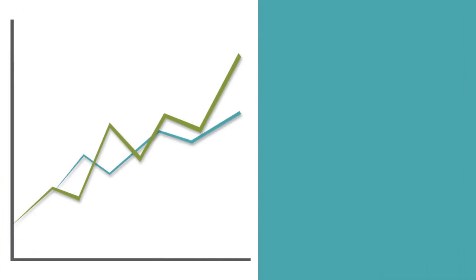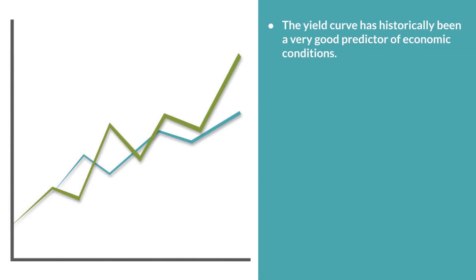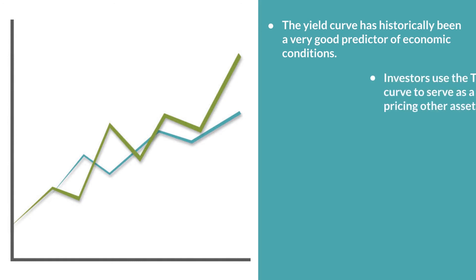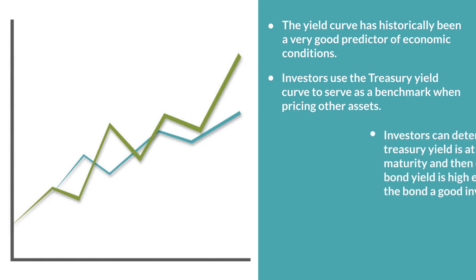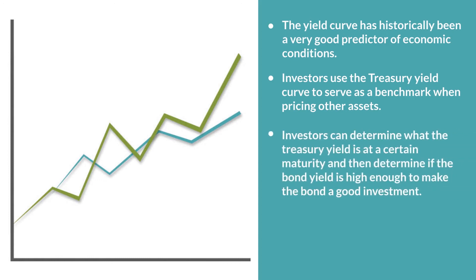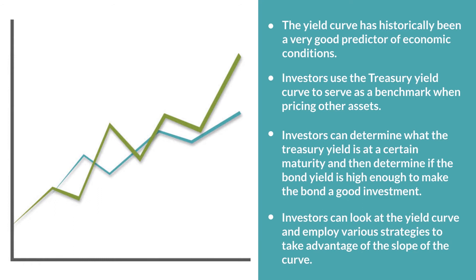The yield curve has many uses. As we discussed in our review, the yield curve has historically been a very good predictor of economic conditions. In addition, investors use a Treasury yield curve to serve as a benchmark when pricing other assets. Treasuries are the least risky investments there are, so when investing in other asset classes such as corporate bonds, investors can determine what the Treasury yield is at a certain maturity and then determine if the corporate bond yield is high enough, or has a spread great enough over the Treasury yield curve, to make the corporate bond a good investment. Finally, investors can look at the yield curve and its current shape, make predictions of its future shape, and employ various strategies to take advantage of the slope of the curve.